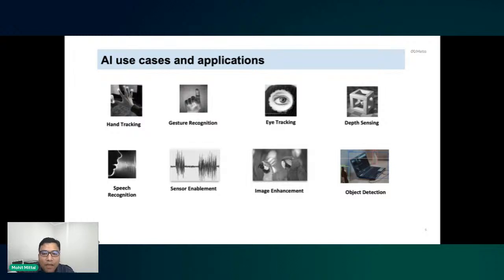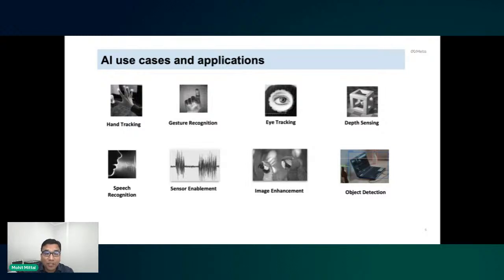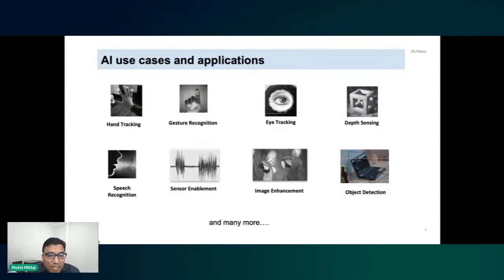Image enhancement is needed because cameras on these devices have very small resolution, which means the image quality is not good — AI is required to improve it. The last major application is object detection, which identifies objects in the real world and enables many user applications. In reality, the list of AI applications needed for AR/VR is huge and growing every day.